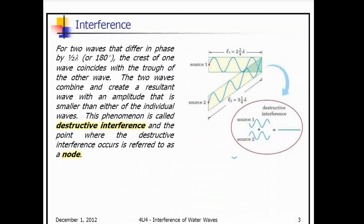If the waves are slightly offset — out of phase by about half of a wavelength — then we have a situation where one wave's amplitude is above its equilibrium and another is below. They create a point where there is destructive interference, so the sum of the two waves adds up to zero or close to zero, which is the equilibrium point. We call that destructive interference, and we have a node occurring at that point.